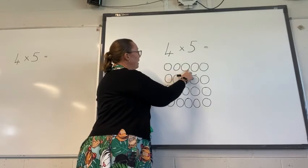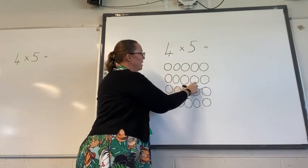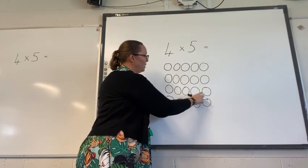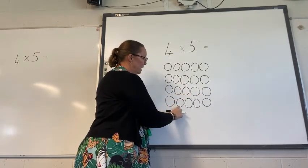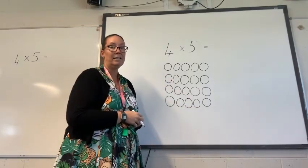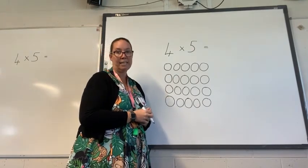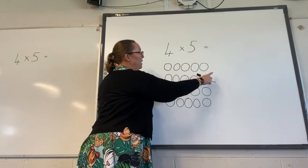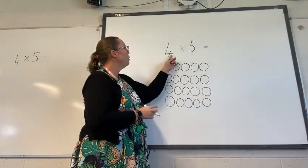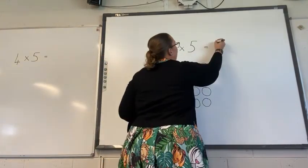Now I can count to see how many I have all together. I can count one by one like that, or an easier way to do it might have been to count by fives: five, ten, fifteen, twenty. So four multiplied by five equals twenty.